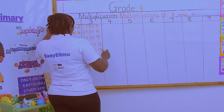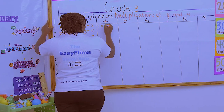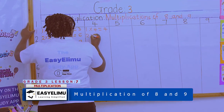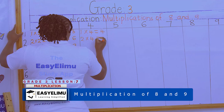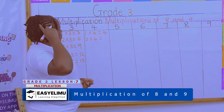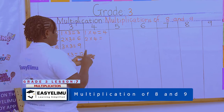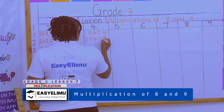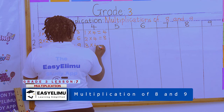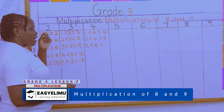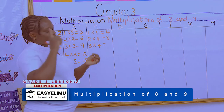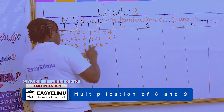For the multiples of 4: 1 × 4 = 4. 2 × 4 is 4 + 4 = 8. 3 × 4 is 8 + 4 = 12.